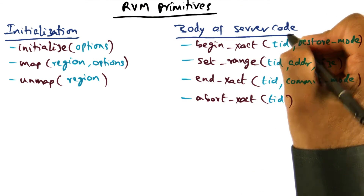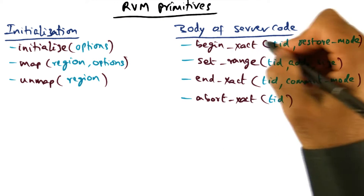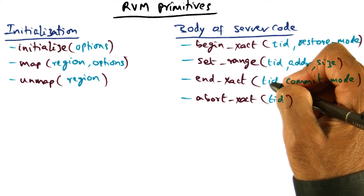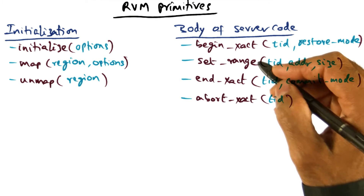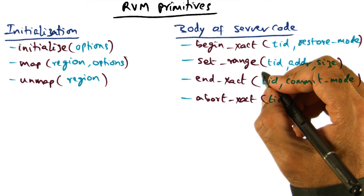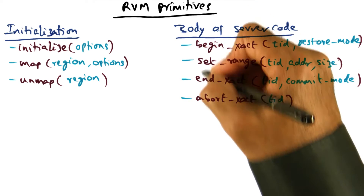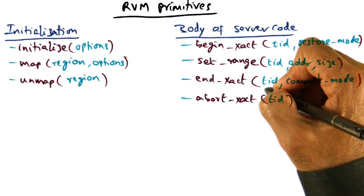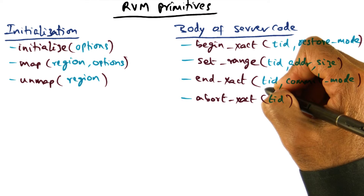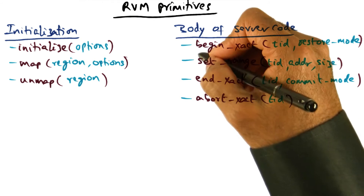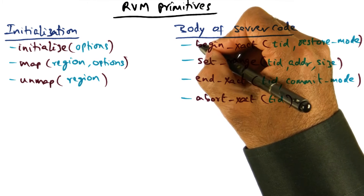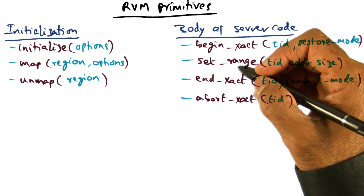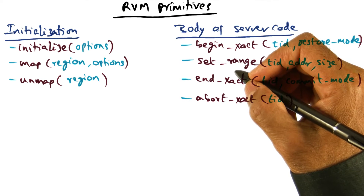In the body of the server code, these are the calls that an app developer would make. The begin transaction and end transaction calls alert the RVM runtime that the application is about to make changes to persistent data structures between those calls. End transaction signals to the RVM library that the transaction has committed, meaning all the changes that the application made between begin and end transaction are to be persisted.